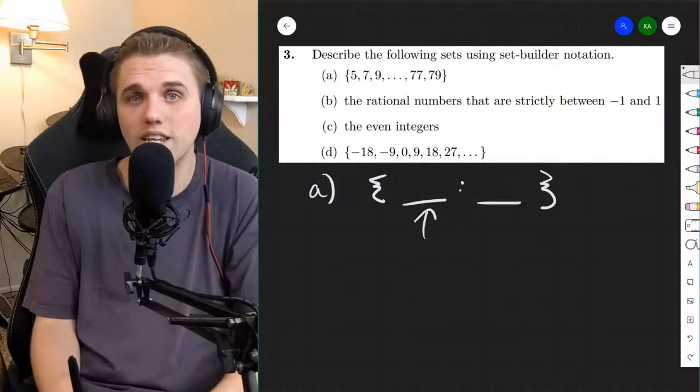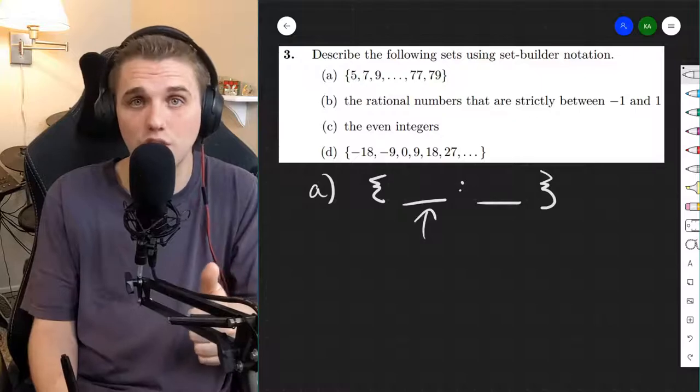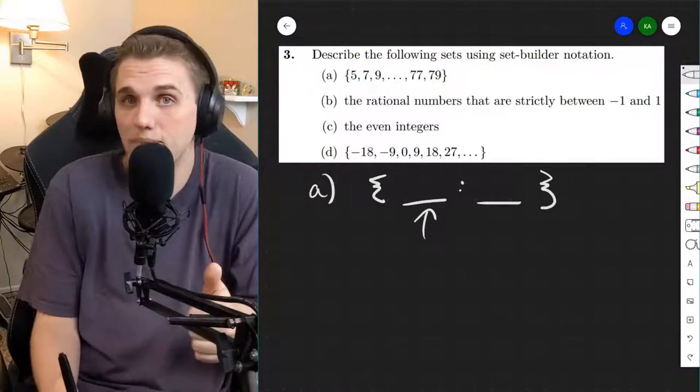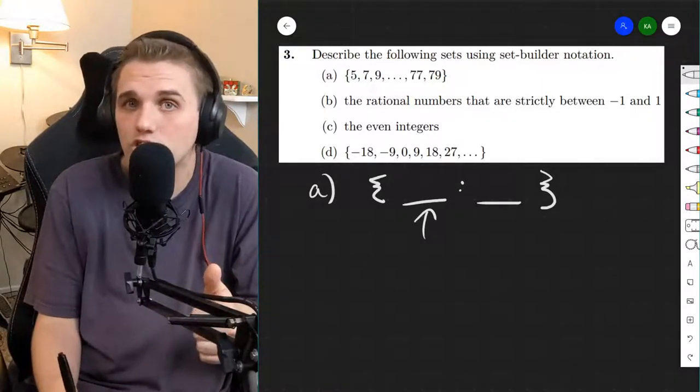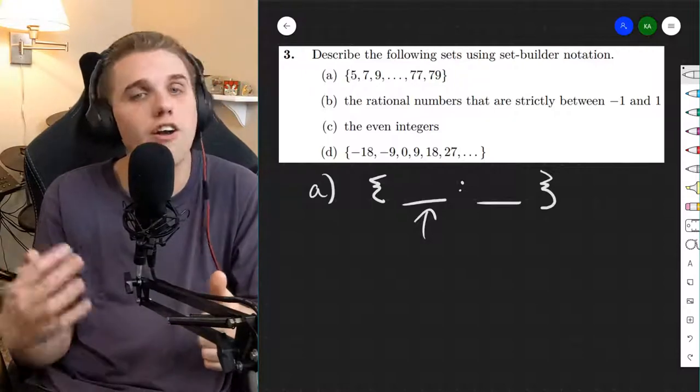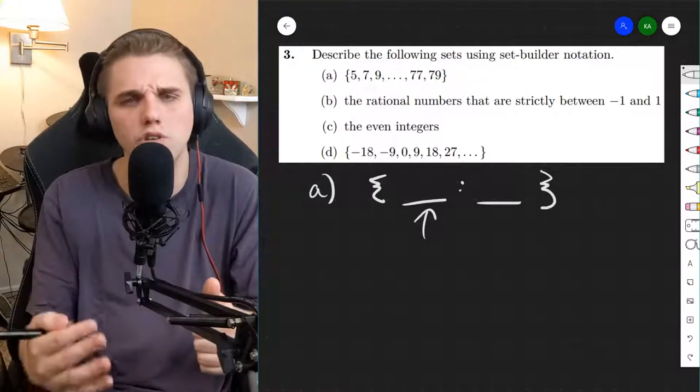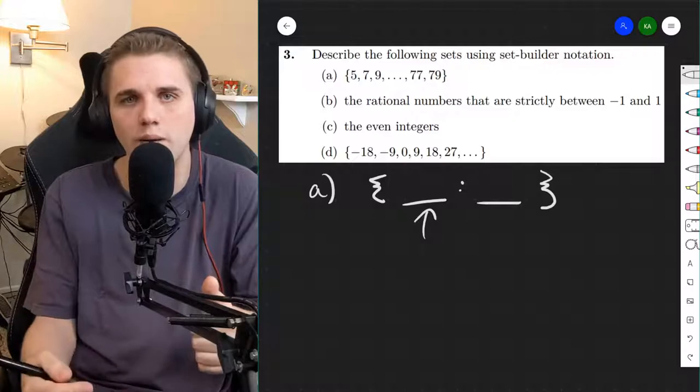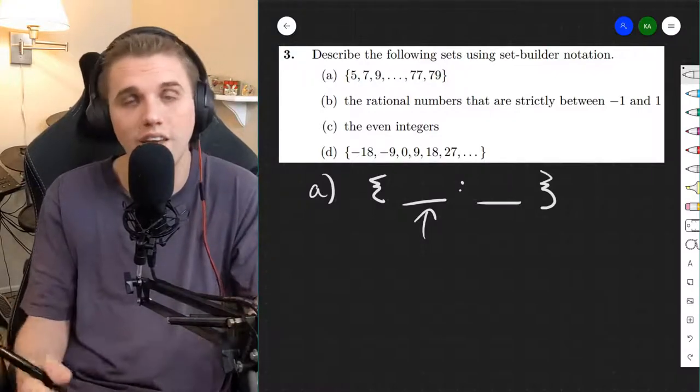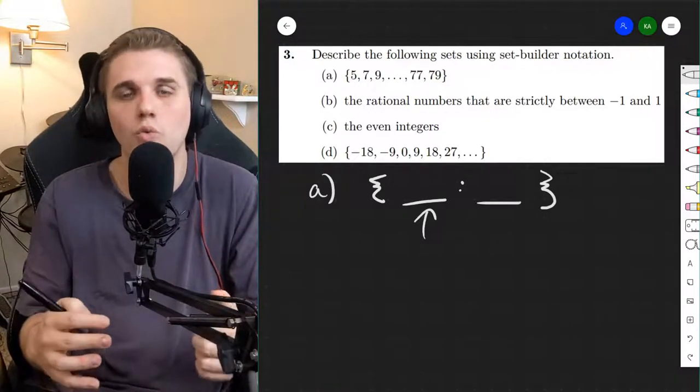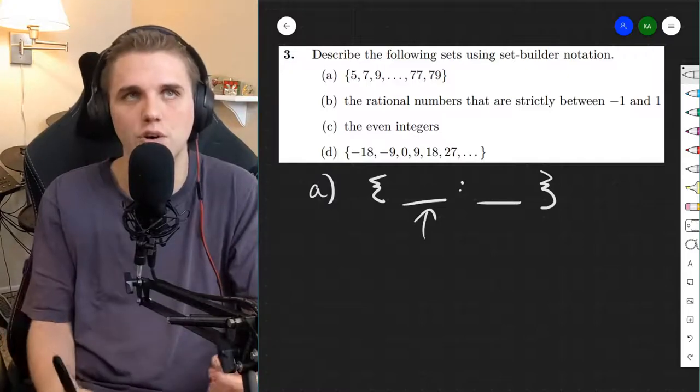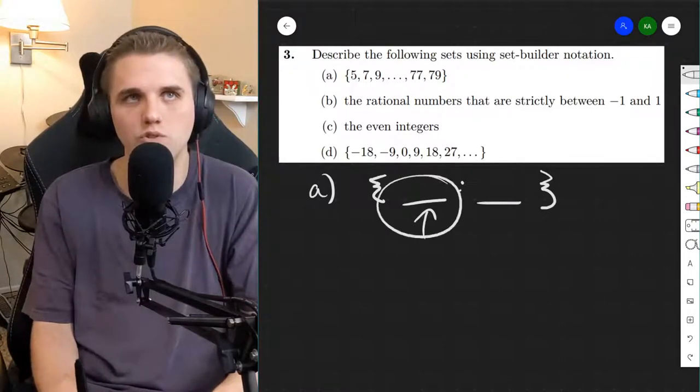On the left side, we identify what the objects look like. Are they matrices? Are they integers? What kind of variables do you use? Use capital letters or lowercase letters to represent the objects, if they're sets or not. So there are a lot of different representations of objects, and this is where the representation goes right here.